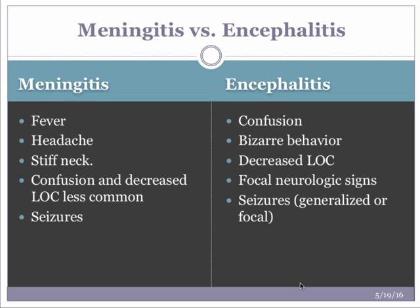Patients with meningitis develop fever, headache, stiff neck, and confusion; decreased level of consciousness is less common, and seizures may occur. This is the patient you'll perform Kernig's and Brudzinski's signs on. In encephalitis, confusion is very common, patients may have bizarre behavior, decreased level of consciousness is a common finding, and focal neurologic signs and seizures — either generalized or focal — may occur.